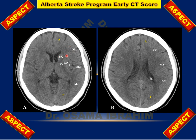We calculate the abnormality and make the score. These 10 points include the caudate nucleus, the internal capsule posterior limb, the lentiform nucleus or putamen, and the insula — that is 4 points. The other 6 are the 6 middle cerebral artery segments: M1, M2, M3 at the ganglionic level, and supraganglionic levels M4, M5, and M6.